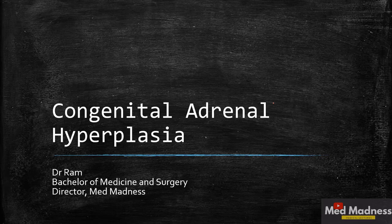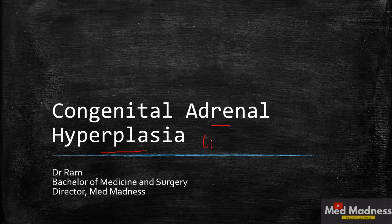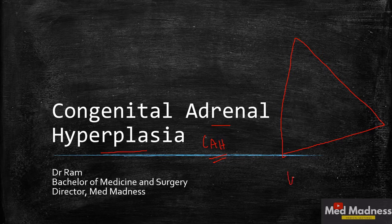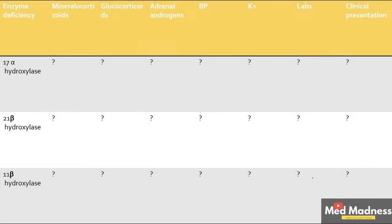Welcome to this session on congenital adrenal hyperplasia. Hyperplasia means gland enlargement — you can see the enlarged gland on top of the kidney. Keep that question in mind. At the end of this session, you will be able to answer all the questions in the worksheet.